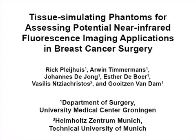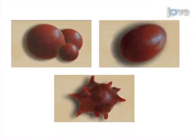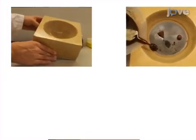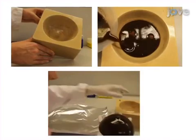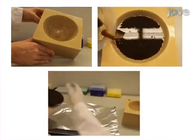The overall goal of this procedure is to simulate near-infrared fluorescence imaging applications in breast conserving surgery using tissue-like breast phantoms. This is accomplished by first creating tumor-like fluorescent inclusions of different size and shape. The second step is to integrate the fluorescent inclusions in breast-shaped phantoms with optical characteristics similar to human breast tissue.